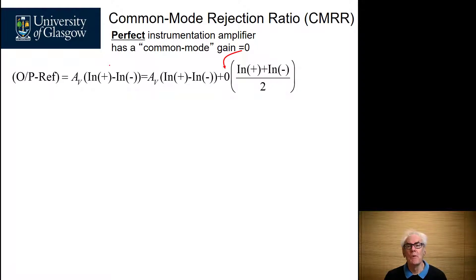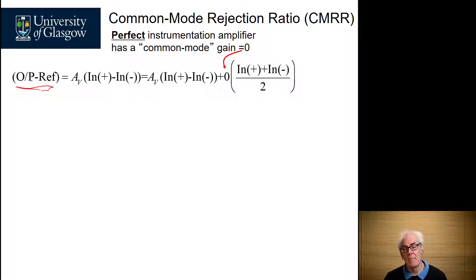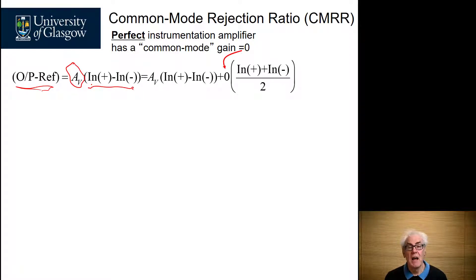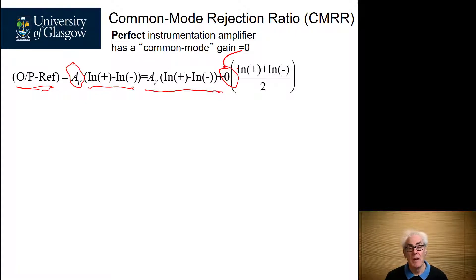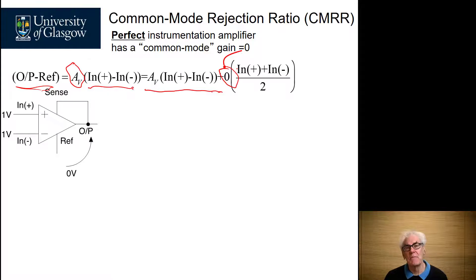Let's have a little look at common mode rejection and how this is defined in the instrumentation amplifier. First of all, we have the output, which is referred to the reference. And we want it to be a voltage gain AV times the difference of the two voltages appearing at the inputs, N+ minus N−. And ideally, we would only get an output signal in response to that difference. But because circuits are never perfect, we may have a contribution from the common mode voltage appearing at the inputs, which is the average voltage at N+ and N−.